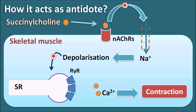Dantrolene plays an important role by breaking the linkage between excitation and contraction coupling. It acts as an antagonist on the ryanodine receptors, thereby inhibiting the release of calcium from the sarcoplasmic reticulum. When there is insufficient calcium release, the muscle does not contract, and heat generation is prevented. Since succinylcholine produces an abnormal release of calcium causing a sudden rise in body temperature, dantrolene acts as an antidote for succinylcholine-induced malignant hyperthermia.